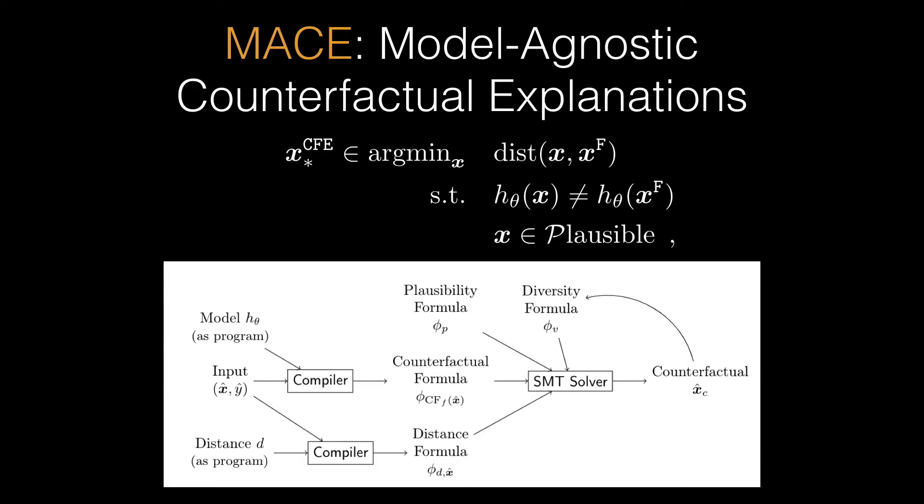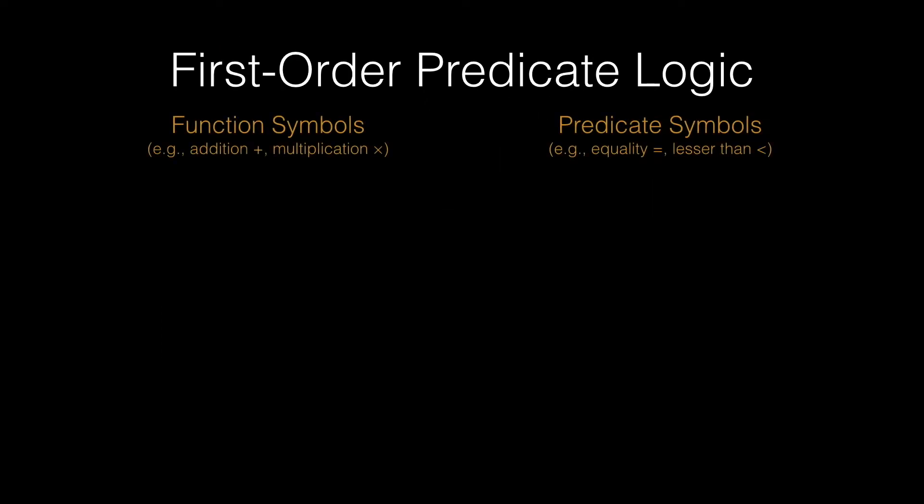In logic, we have many symbols, among which function symbols and predicate symbols are two central types. Function symbols allow us to write expressions, and predicate symbols allow us to write atomic formulae.